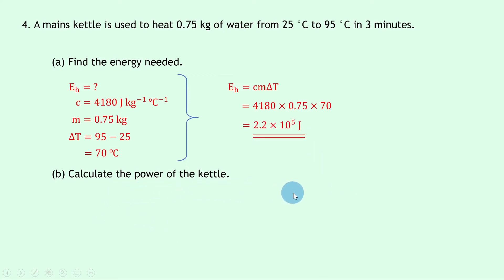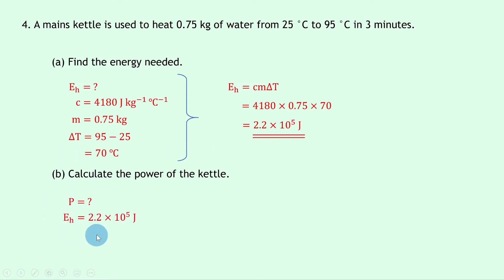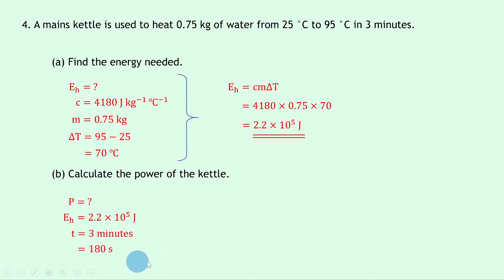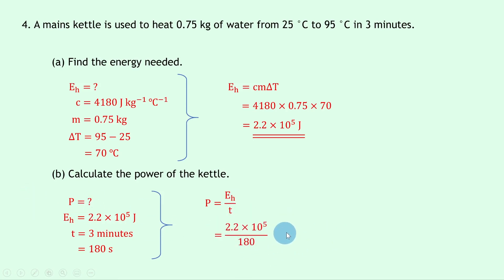Part b says calculate the power of the kettle. We have energy E_H = 2.2 × 10⁵ joules and time t = 3 minutes, which we convert to 180 seconds. Assuming all the energy goes into heating the water, using P = E_H ÷ t gives 2.2 × 10⁵ ÷ 180, which equals 1.2 × 10³ watts.